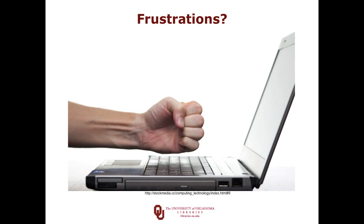I want to start by talking about our frustrations with online learning environments and reading lists. When we create reading lists in online courses, we create a defined list of resources — the instructors pick it, they load it, the students are supposed to read it, and that's seemingly the end of it. If we're trying to teach students about this subject, shouldn't we be teaching them more about how to find the right resources, to explore other resources, to look at other points of view? Why do we limit them with reading lists that only give them a certain set of things to read?